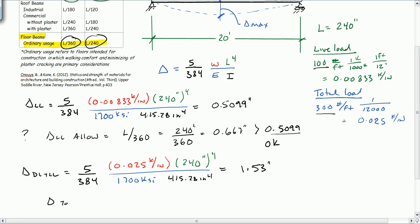Delta total allowable is equal to L over 240, which is 240 inches divided by 240, which is equal to 1.0, which is less than 1.53. So this is no good.